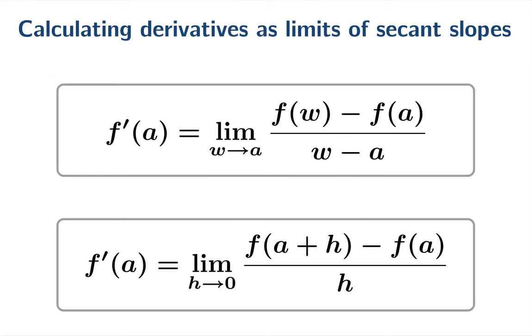So we have these two, they're not different methods, they're simply different notations for the same method really. What we're doing is we're taking a limiting value of secant slopes.